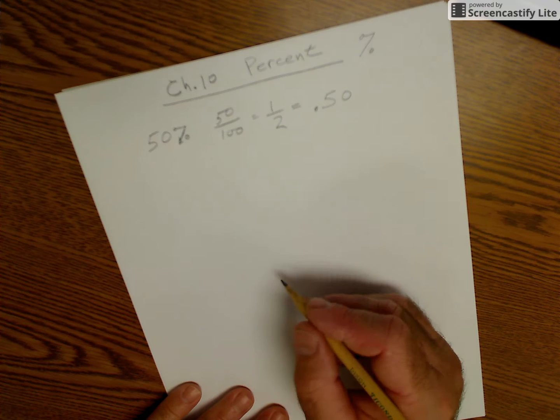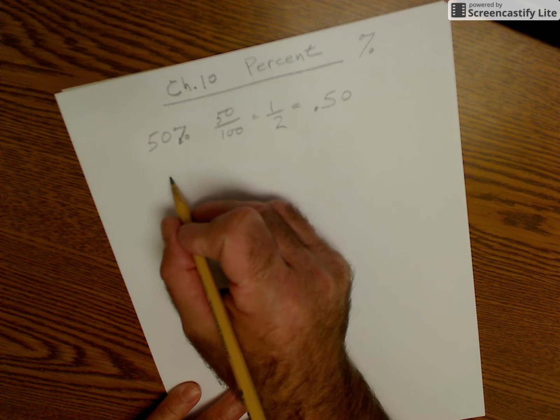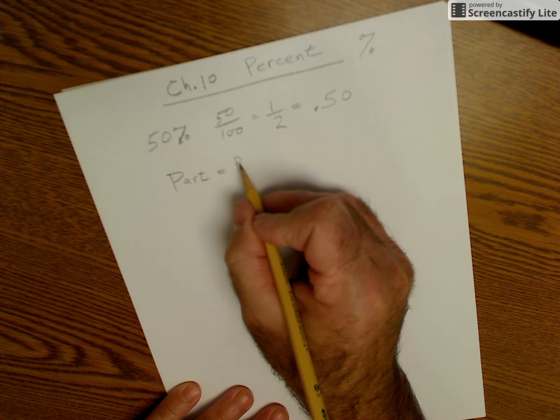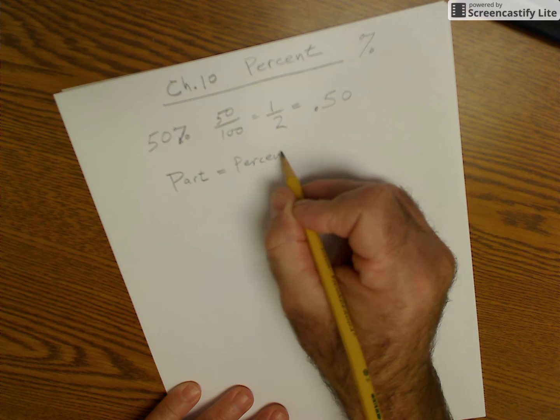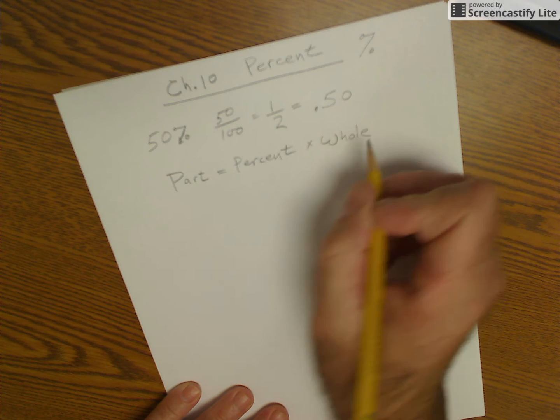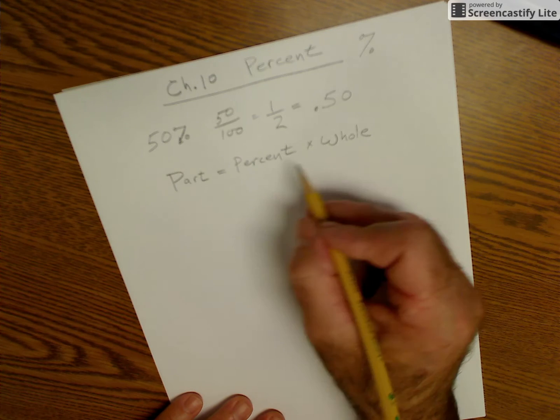The basic formula for percent is the part is equal to the percentage times the whole. So the part I'm looking for is whatever percent times the whole.